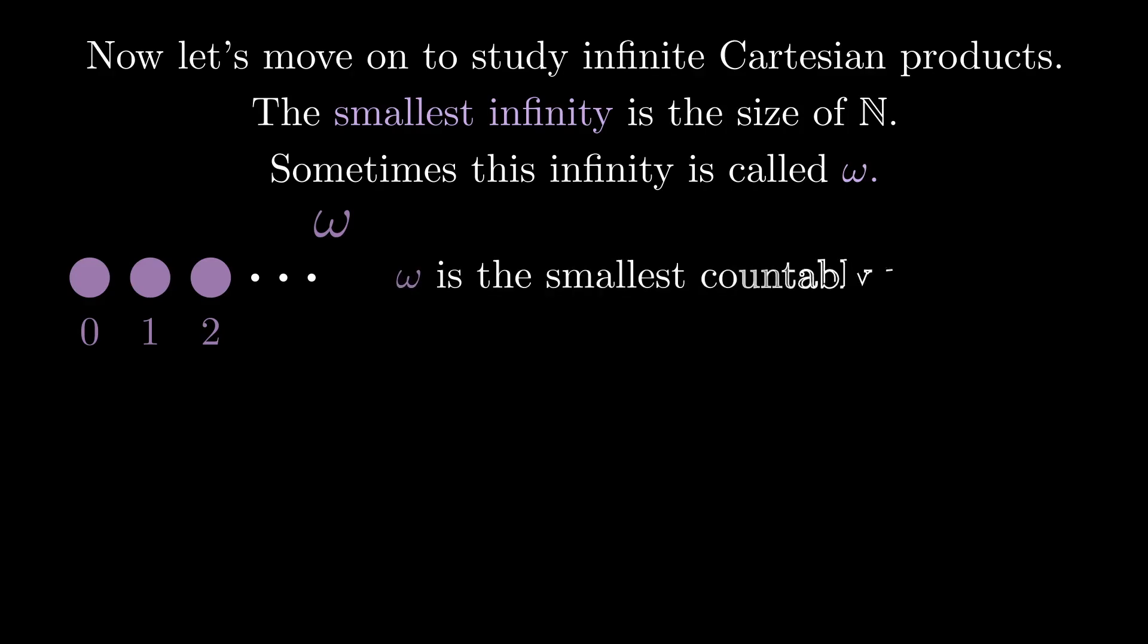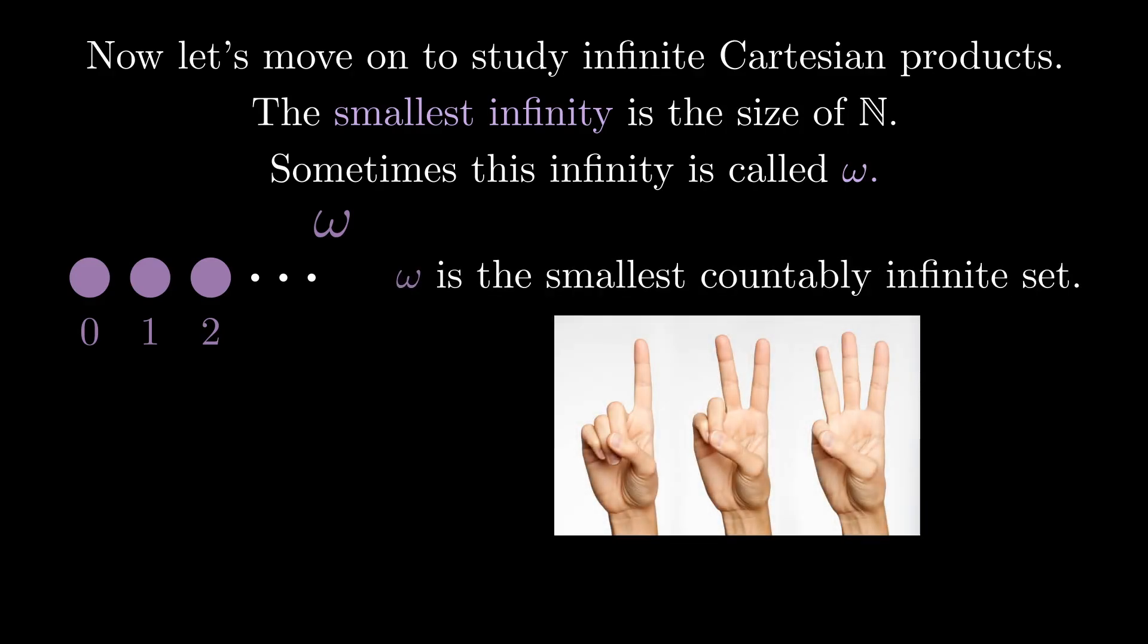Omega is said to be the smallest countably infinite set. Here countably infinite means that I could count the number of elements in omega if I could grow a finger every second for the rest of eternity.